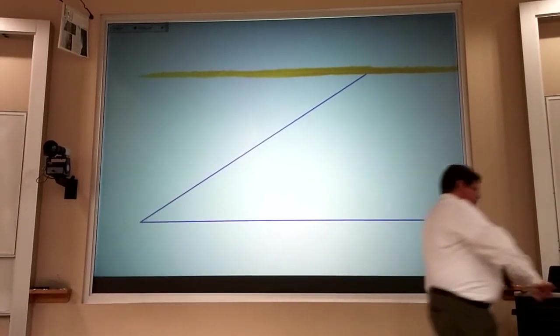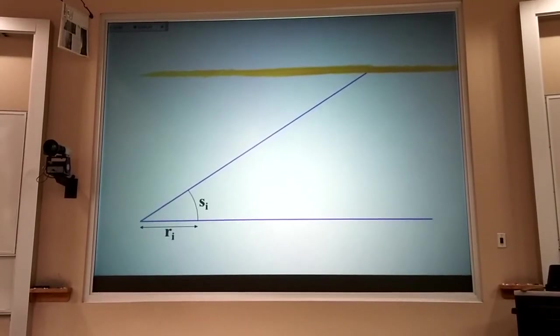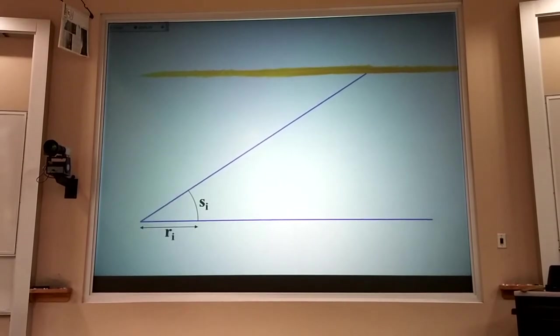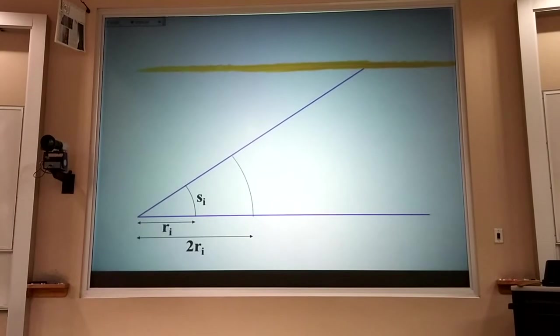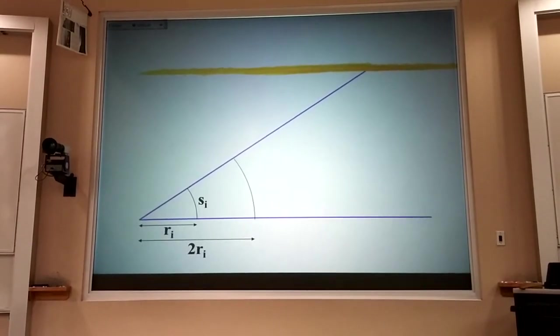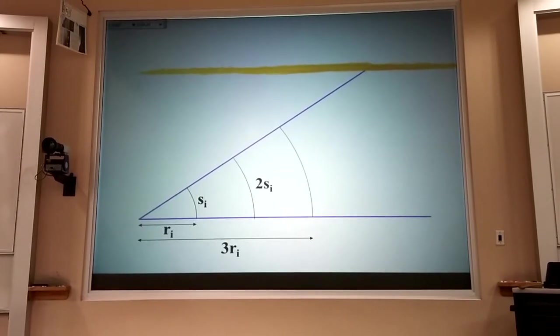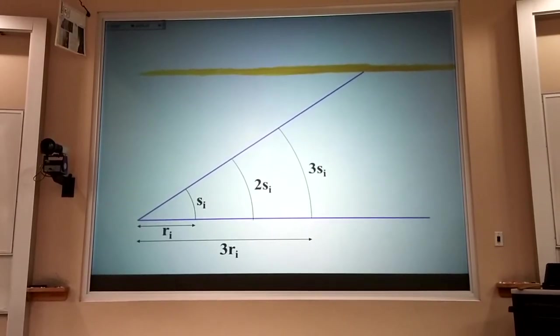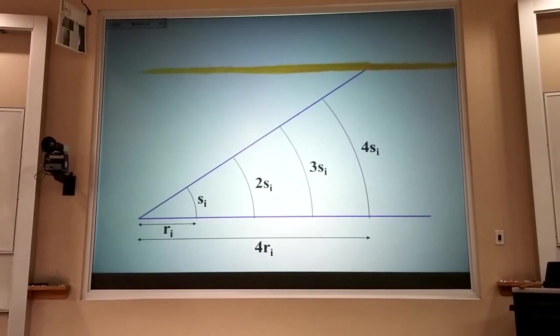Now, if I came out a distance r and drew an arc length s, if I came out twice as far and drew an arc length, it shouldn't surprise you that that arc length would be twice as long. And if I went out three times as far, it would be three times as long, four times as far, four times as long.